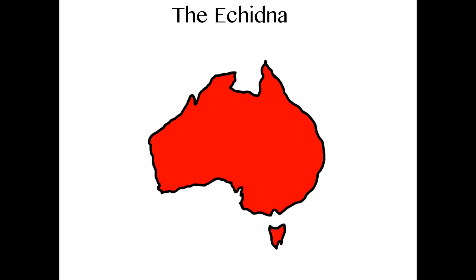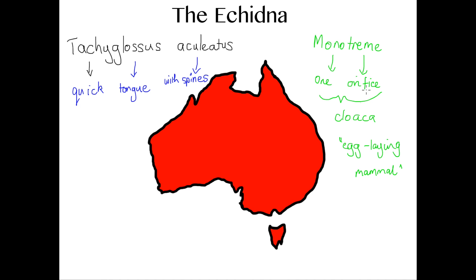Our Tachyglossus aculeatus translates as quick tongue with spine, which is a pretty accurate description of our little friend. It's also a monotreme, one of two monotremes, the platypus and echidna, in Australia, which means one orifice - it's a cloaca, which is used for defecation, urination and reproduction.